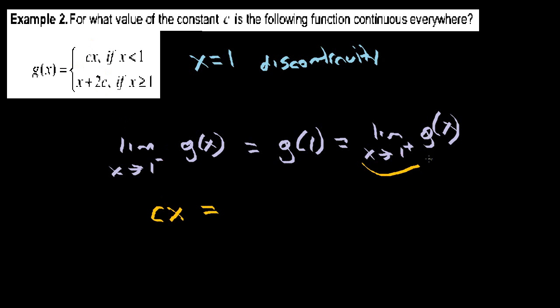Then we check for the right side. As x is approaching one from the right side, it's going to be greater than one and never actually approaching one, but it's going to be always greater than one, which means we use this portion of the piecewise function right here. So this would have to equal x plus 2c.